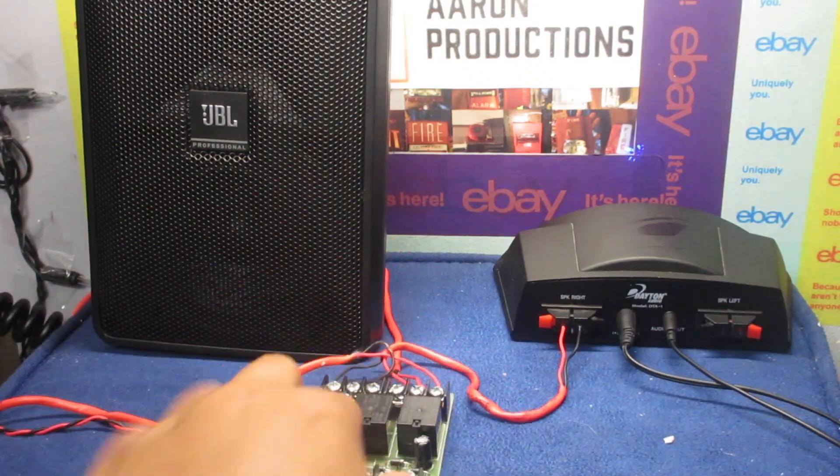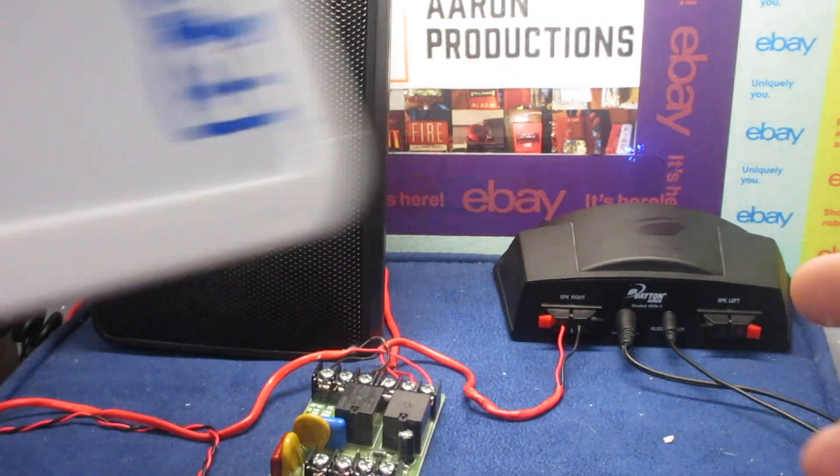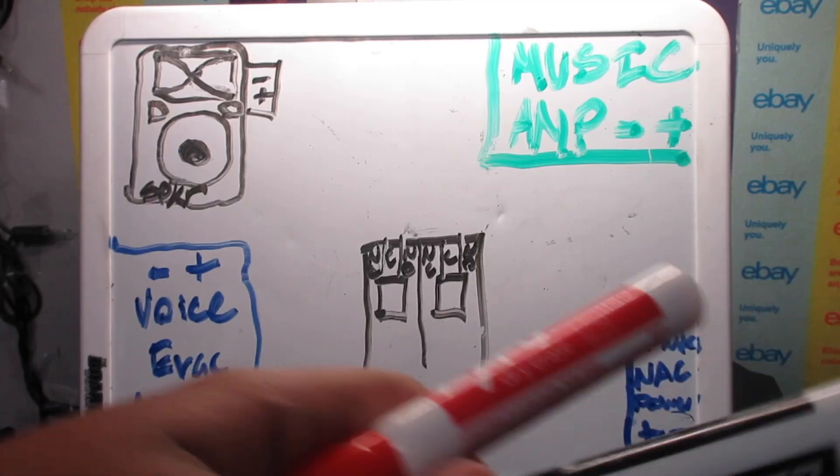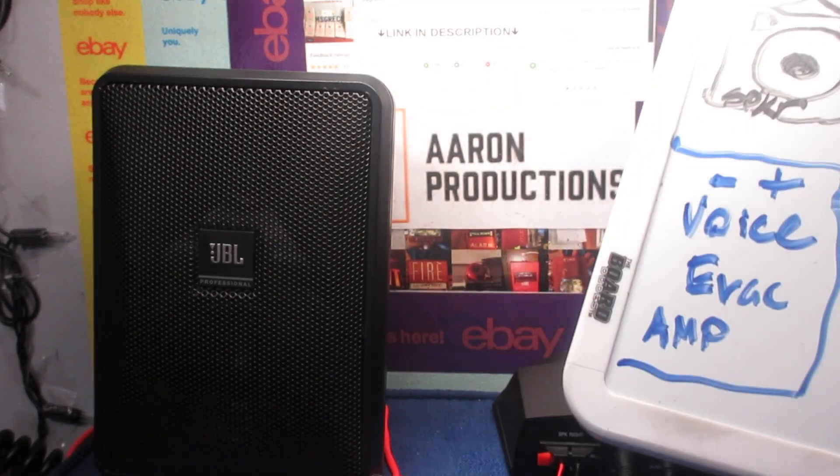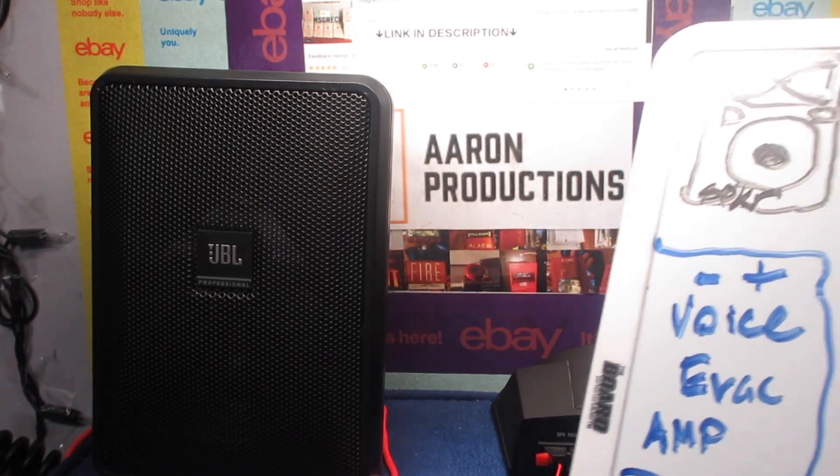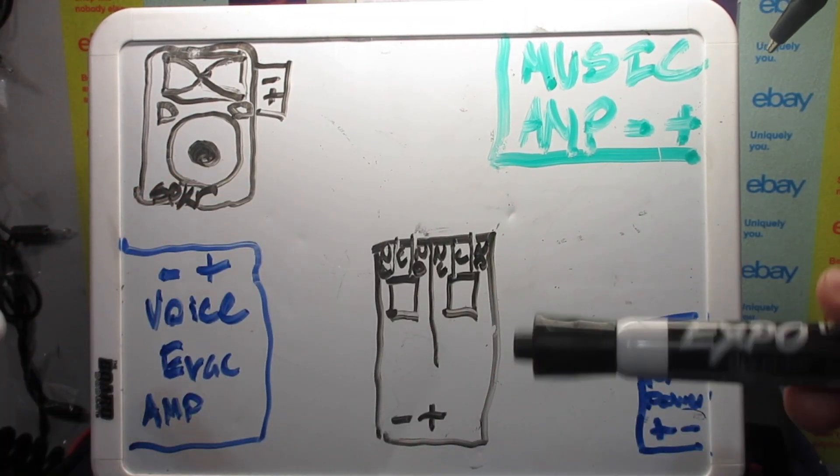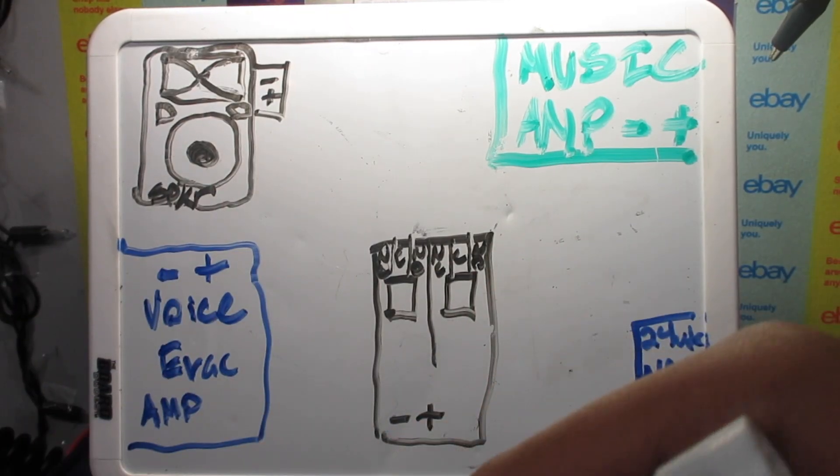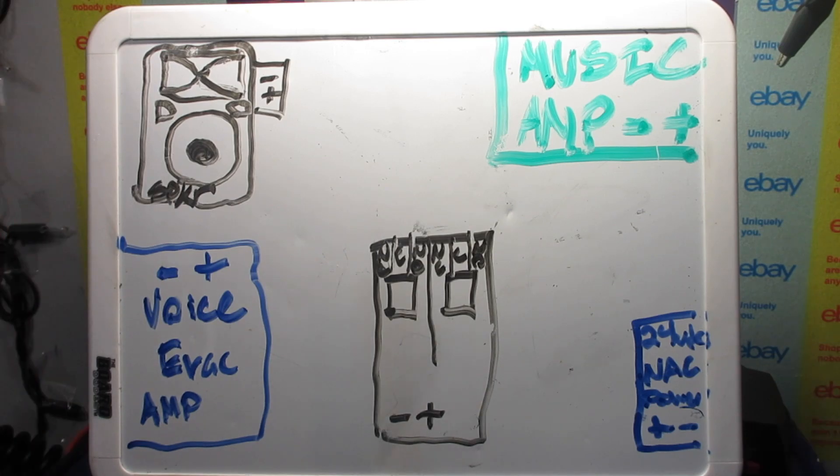So this kind of looks a little bit confusing to most people I'm sure, so I'll do it on this whiteboard. Make sure that the speakers that you have are rated for 70 or 100 volts. This one's 70 volts. So I have red and black for the positive and negative. The reason we need a dual relay instead of a single relay is because we cannot have the negative spliced together because there are two different amplifiers.